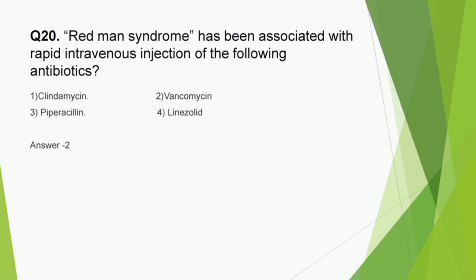Question number 20: Red Man syndrome has been associated with rapid intravenous injection of which of the following antibiotics - Clindamycin, Vancomycin, Piperacillin, or Linezolid? The correct answer is Vancomycin. Red Man syndrome is an adverse drug reaction to Vancomycin characterized by erythematous rashes, urticaria, angioedema, etc. Also note other similar syndromes: DRESS syndrome related to Meftal Spas, Blue Man syndrome related to Amiodarone, and Grey Baby syndrome related to the antibiotic Chloramphenicol. Thank you.